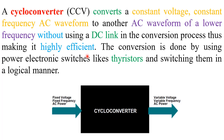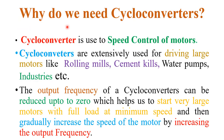The conversion is done by using power electronic switches like thyristors, switching them in a logical manner. Here we see the diagram of the cycloconverter. The input of the cycloconverter is fixed voltage, fixed frequency AC power, and the output is variable voltage, variable frequency AC power.